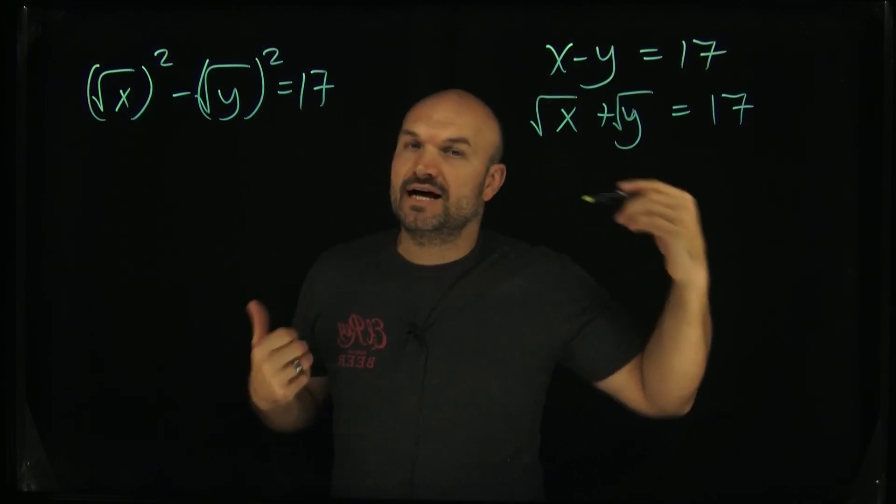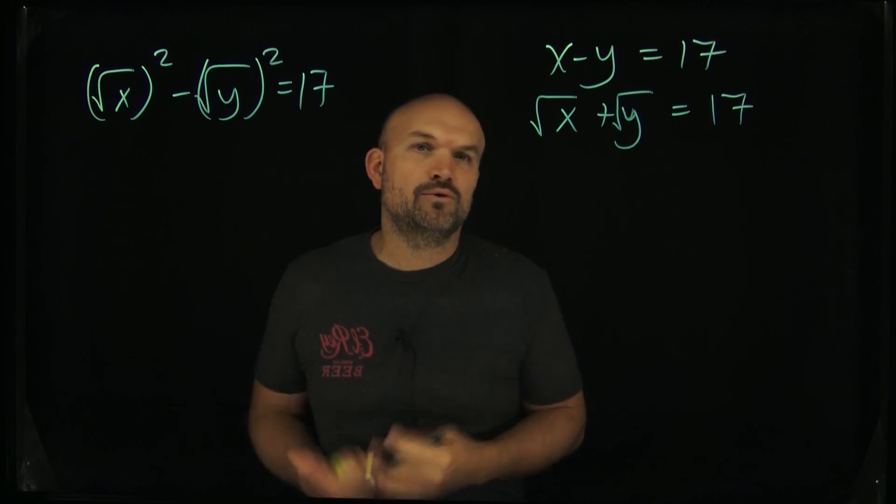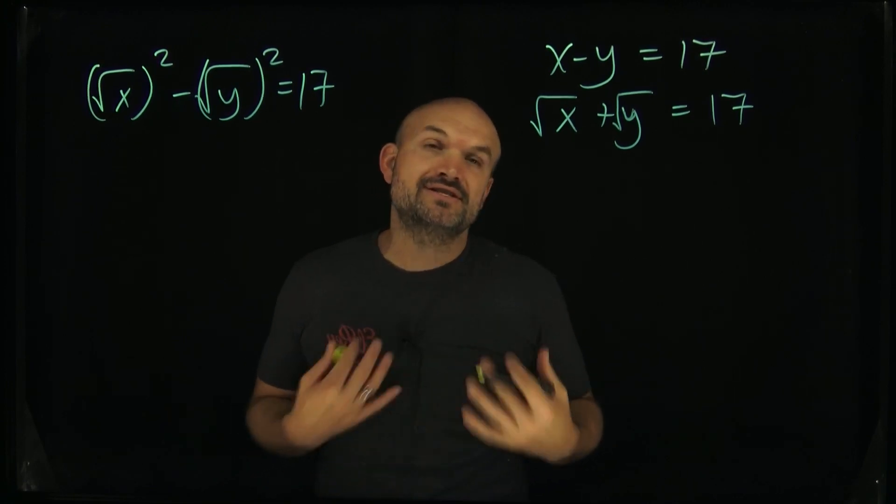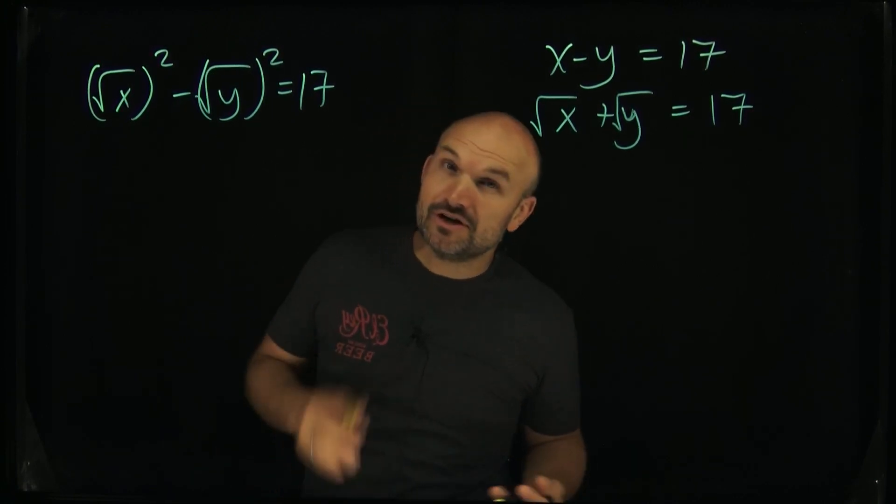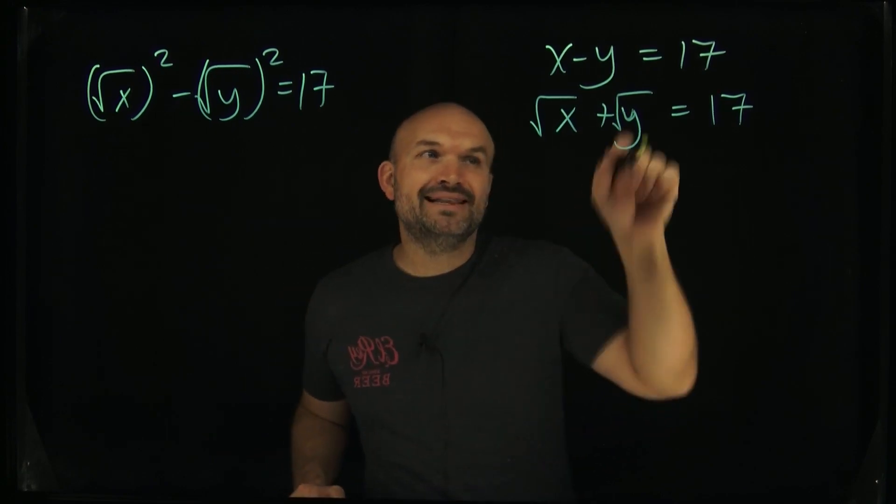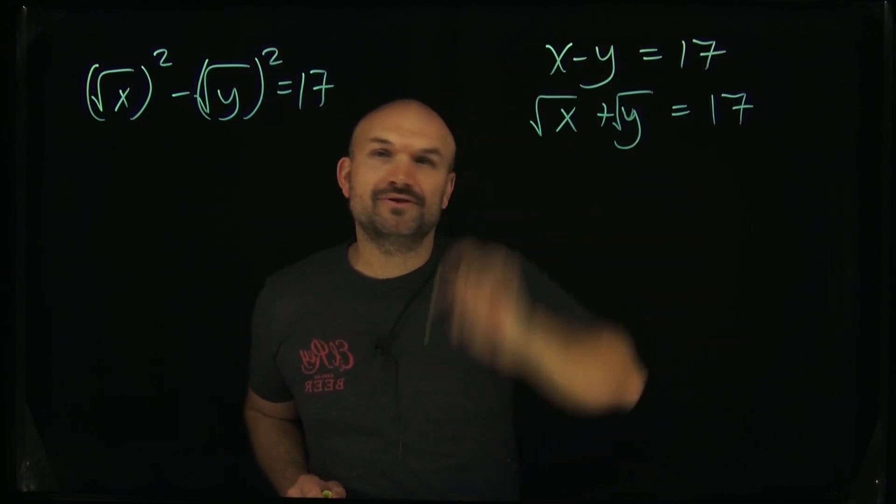If I was to square both of these, which would put them into the same format, that'd be a square term plus another square term, which is not going to work for the sum of two squares. However, I could do it for the difference of two squares.